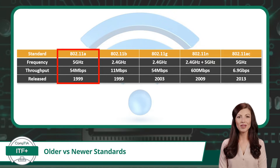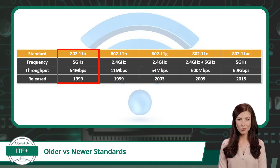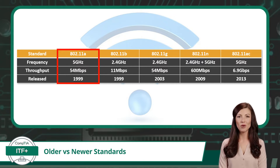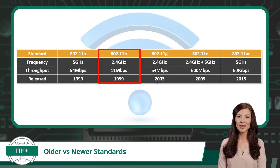In 1999, the 802.11a standard was released. Though not the first, this Wi-Fi standard was responsible for solidifying Wi-Fi as the predominant communication standard for short-range wireless computer networking. Not even a year later, in the fall of 1999, we were given 802.11b.